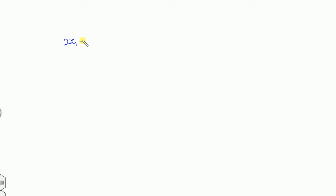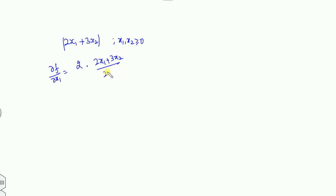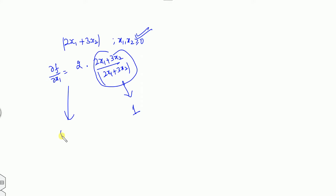For the last example: mod(2x1 plus 3x2) where x1 and x2 are both greater than 0. The partial derivative with respect to x1 is 2 times 1, which equals 2 — always a constant on this domain. Since the derivative is constant over the domain, this is a linear function.